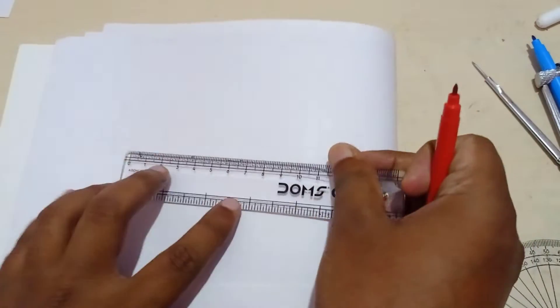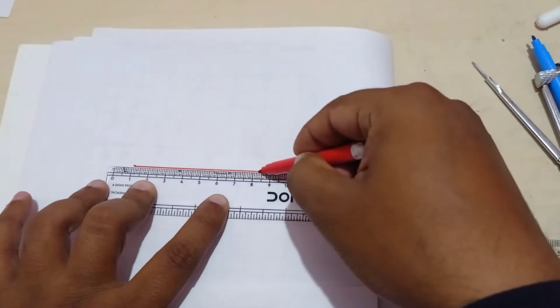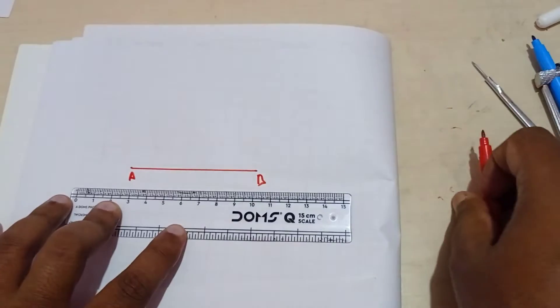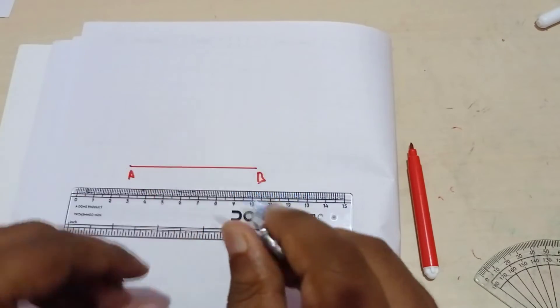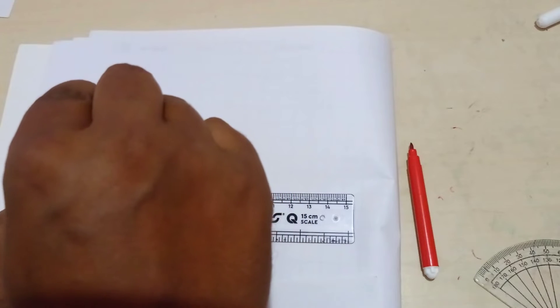First I am going to draw one straight line. This is A, this is B. Then take compass and measure any radius. Any radius you can measure. Keeping at this point just draw one circle.